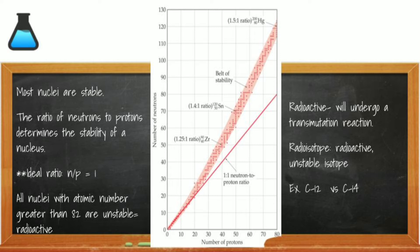Nuclear reactions happen when isotopes are unstable. Most isotopes are stable because they have an ideal proton-to-neutron ratio. When the proton-to-neutron ratio is one, it is represented by the bold red line, and the pink shaded area shows the band of stability — the area where the most stable isotopes can be found. Generally, a proton-to-neutron ratio of one is ideal.